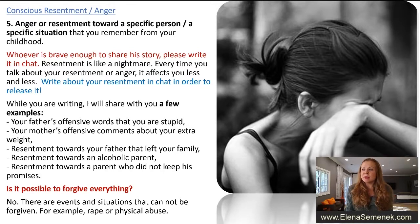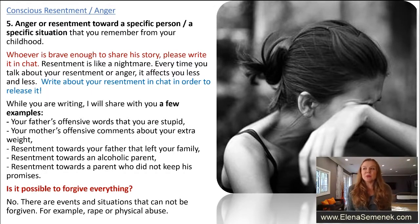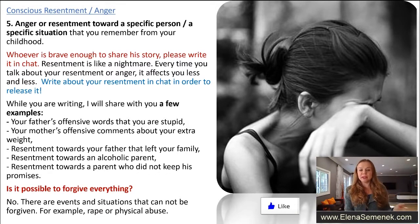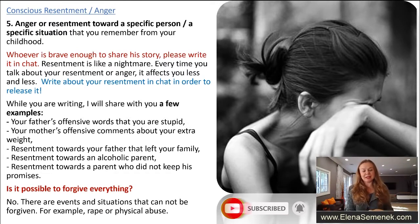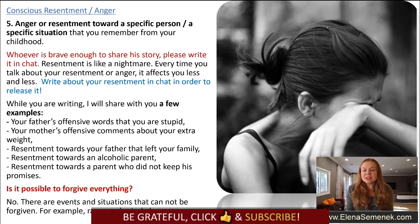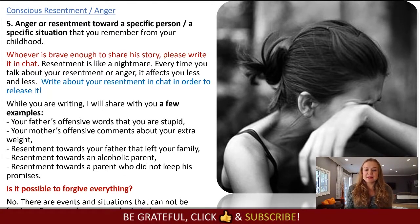Another example is resentment towards an alcoholic parent. Often people feel pity, but in reality it's anger — we suppress it because we cannot express anger towards an alcoholic parent. We try to look for excuses and explain to ourselves and others why they are drinking. Another example is resentment towards parents who did not keep their promises. Parents think the child will forget, but children often do not forget — they just suppress their resentment and their pain. The question is: is it possible to forgive everything? No. Raw situations like rape or physical abuse cannot simply be forgiven.